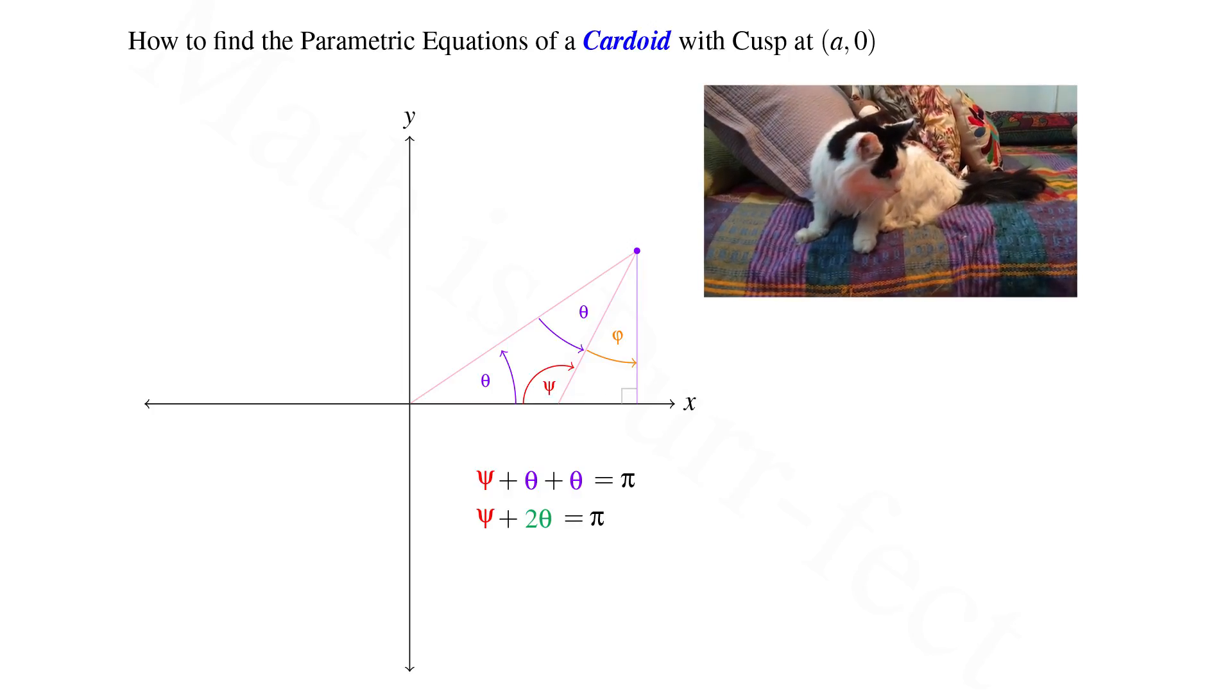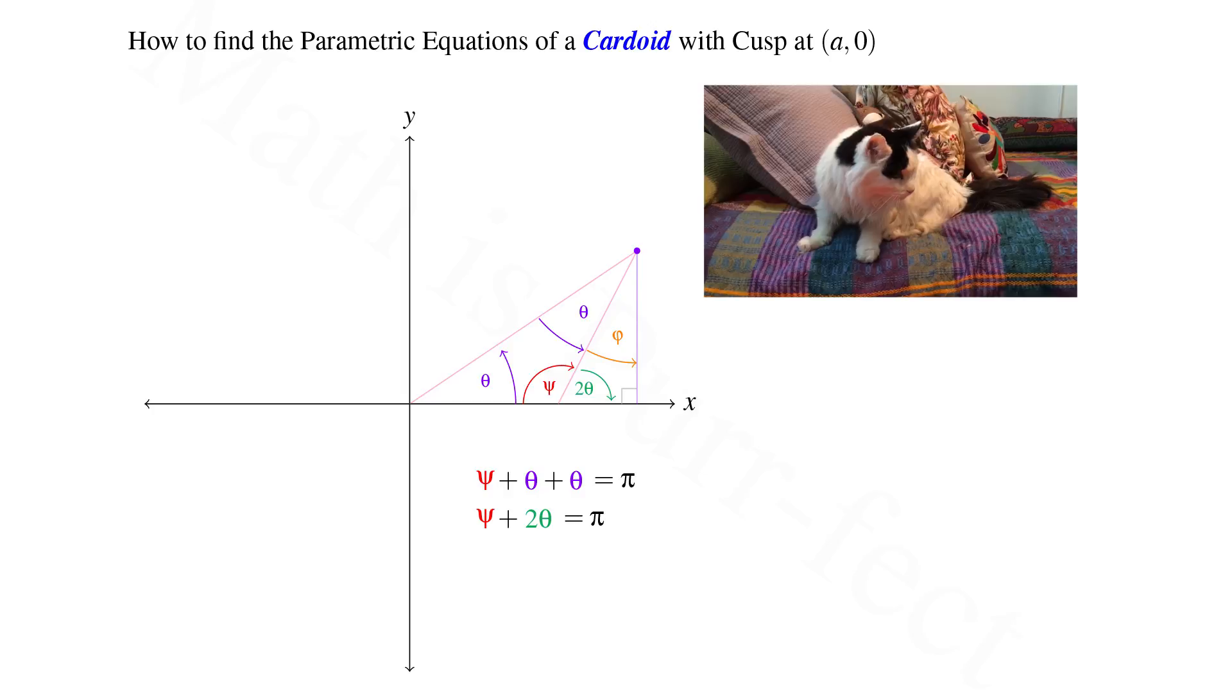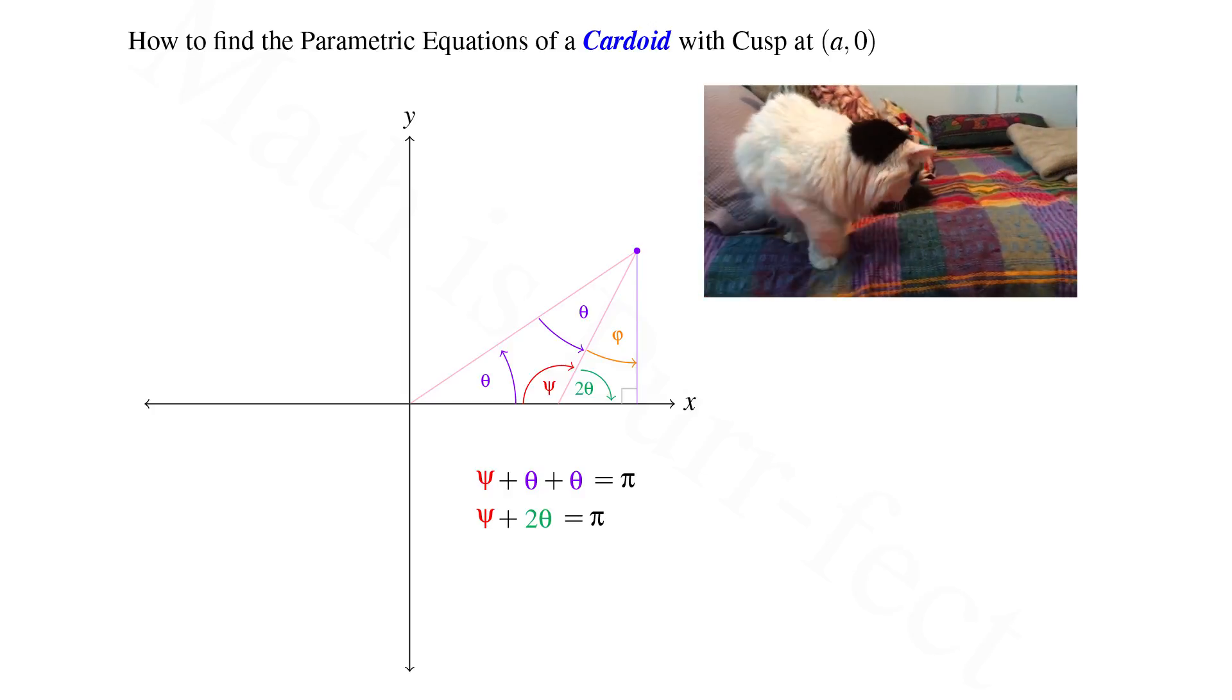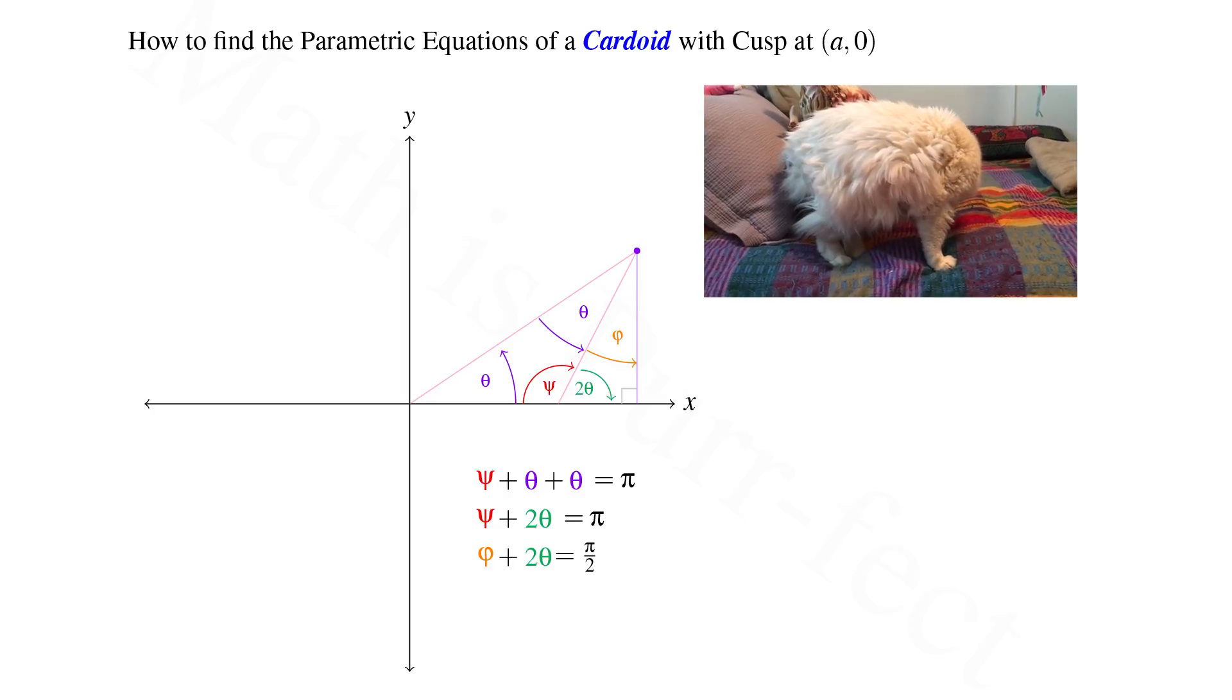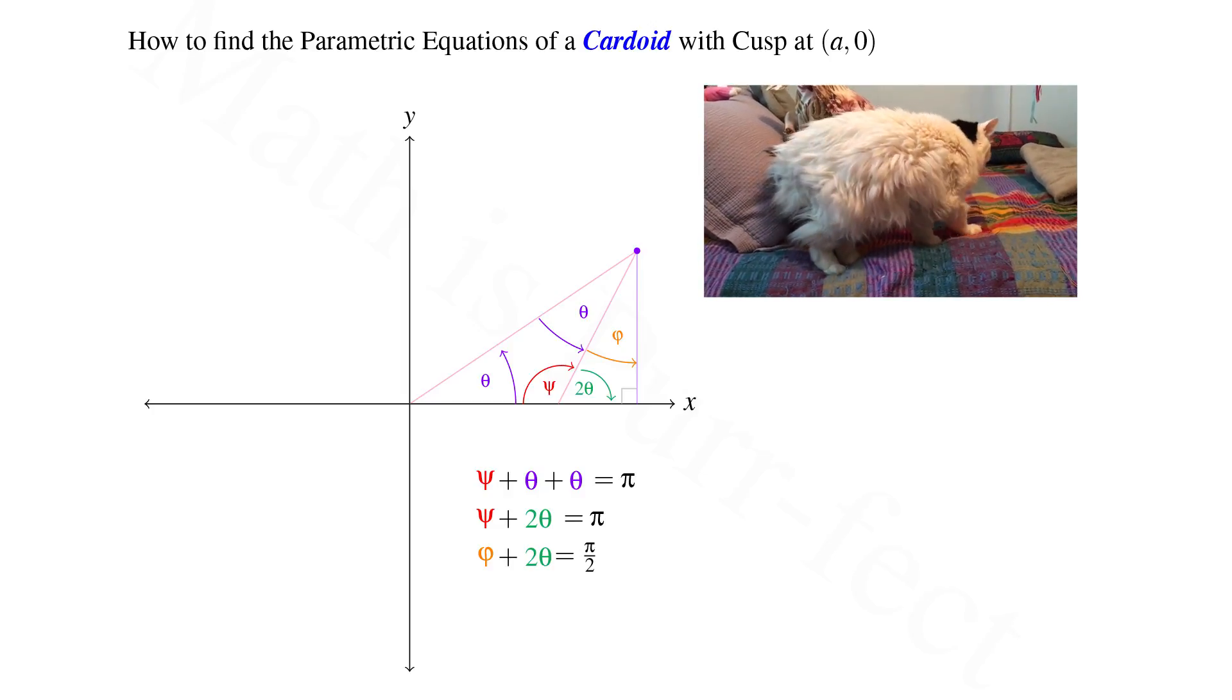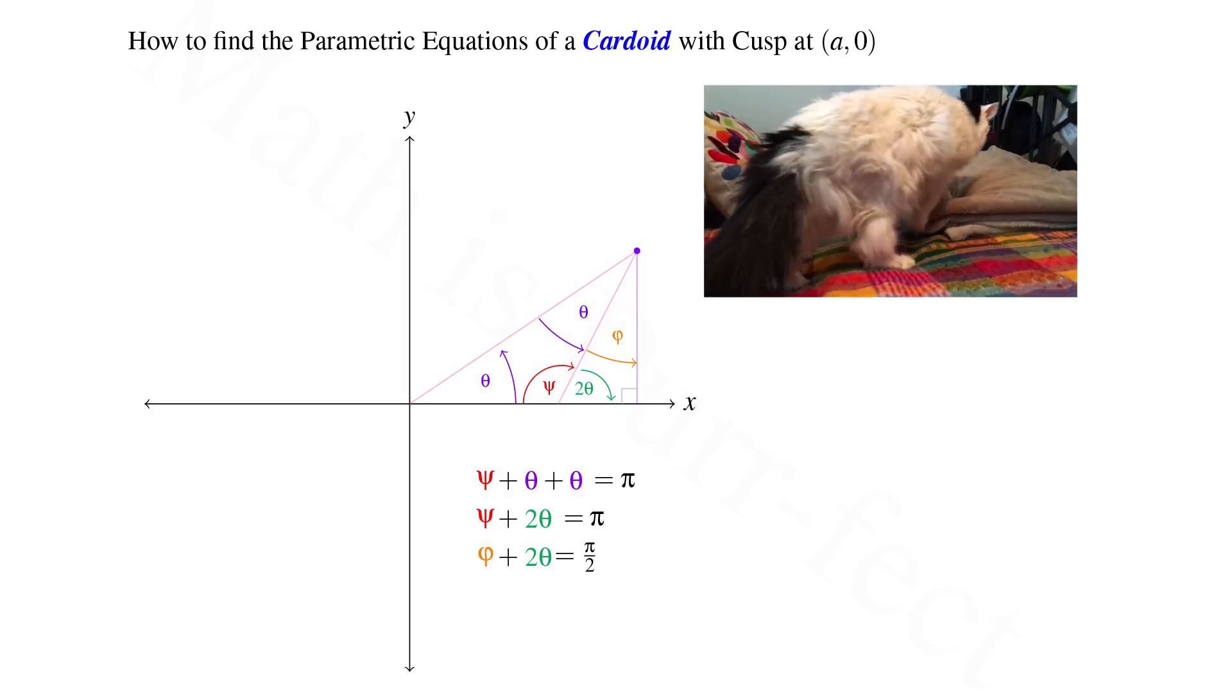We also know that supplementary angles sum to pi. Hence, the supplement to psi is also 2 theta. However, 2 theta is the remaining angle in the triangle with phi along the perpendicular. Hence, phi plus 2 theta is pi over 2.